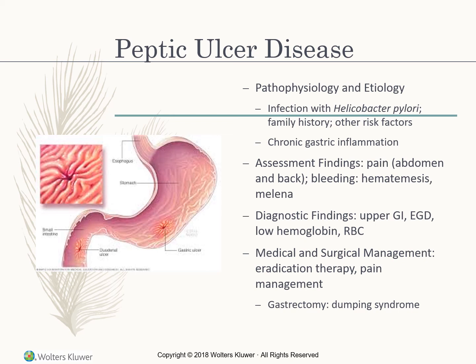Surgical management includes eradication therapy (removal of part of the stomach) and pain management. Table 45-3 on page 792 in Timbi shows surgical procedures for peptic ulcer disease. If the stomach is removed, there is a risk of dumping syndrome — when solid foods are taken after surgery, it causes palpitations, weakness, hypotension, dizziness, and diarrhea. If too many carbohydrates reach the jejunum, this stimulates the pancreas to secrete insulin, causing hypoglycemia.